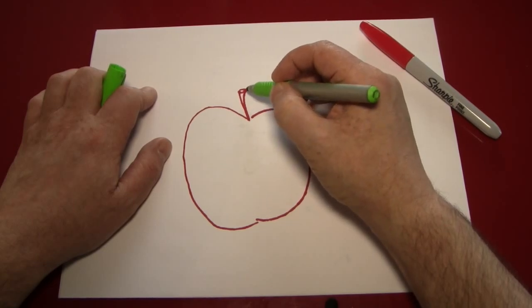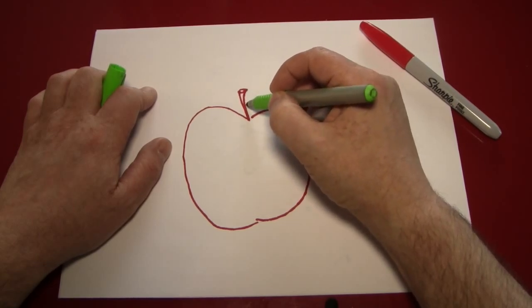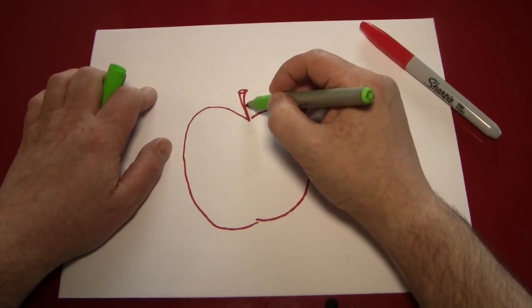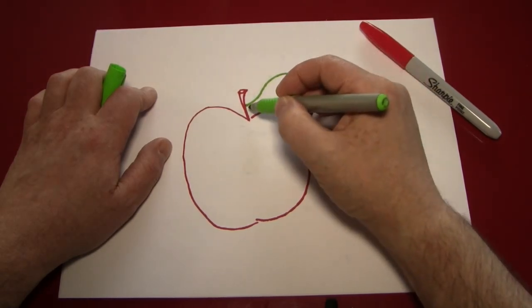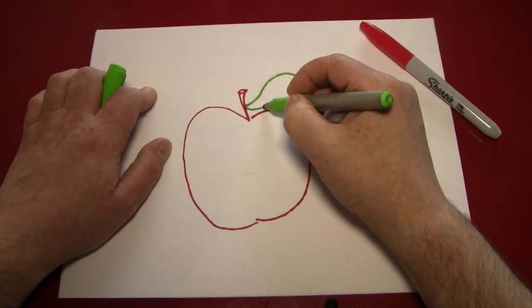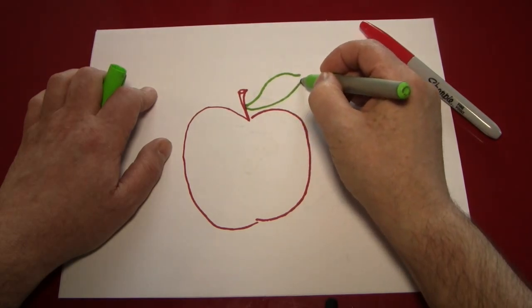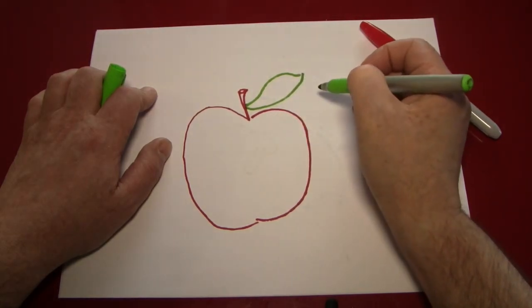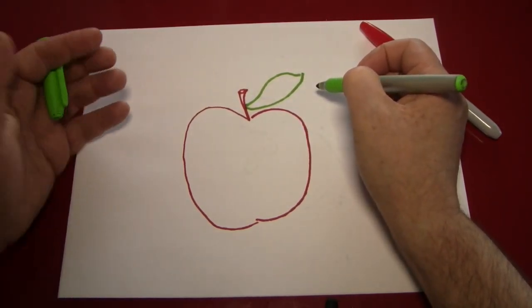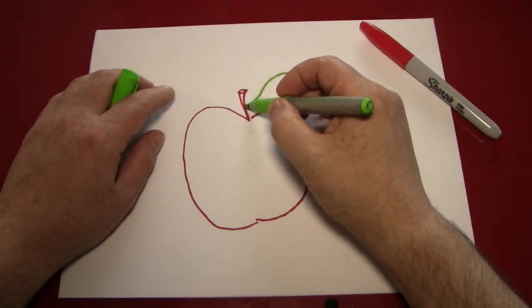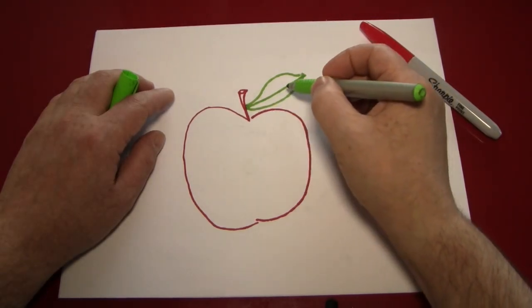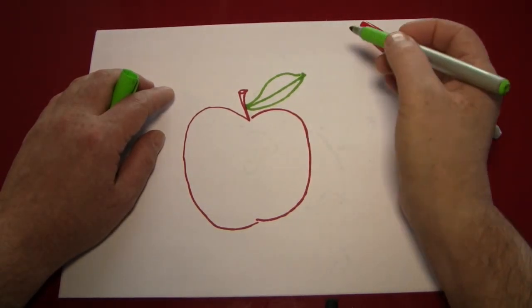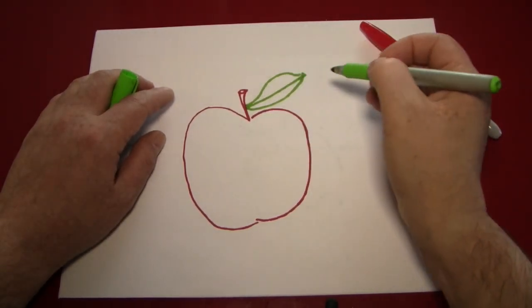We're going to find a part for it to start. Right there seems pretty good. Make a long flattened out S, and then a curved line which meets it at the end. Now we'll simply place a line along the middle, indicating the vein of the leaf. And we've drawn a leaf on our apple.